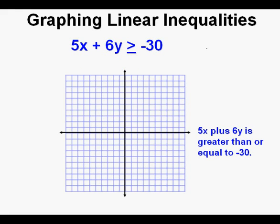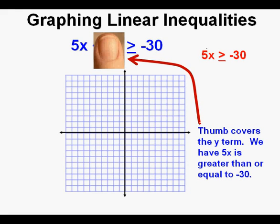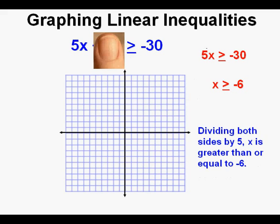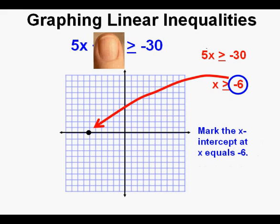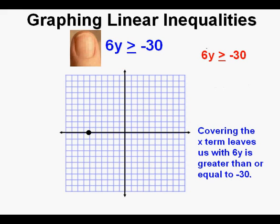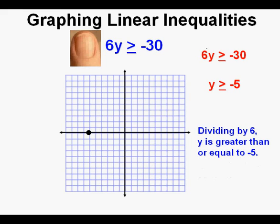Let's look at this other inequality: 5x plus 6y is greater than or equal to negative 30. We use the thumb to cover the y term, leaving us with 5x is greater than or equal to negative 30. We solve for x by dividing both sides by 5 to get x is greater than or equal to negative 6. We mark the x intercept on the x axis at negative 6. Now we find the y intercept by covering up the x term, leaving 6y is greater than or equal to negative 30. Dividing both sides by 6, y is greater than or equal to negative 5. We mark the y axis at negative 5.